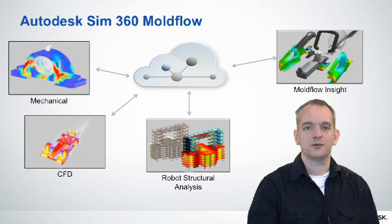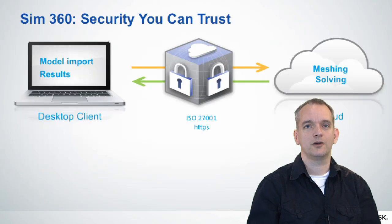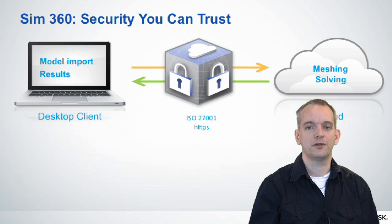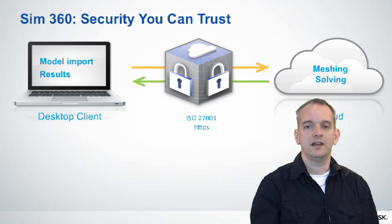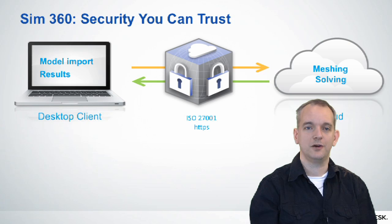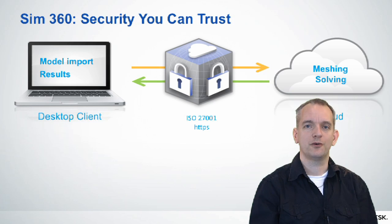Basically you put your client or user interface on your local machine — that can be a laptop or your desktop machine — and you bring in your models in that user interface. When you do something computationally expensive like meshing or running a solve, the data is transferred from your local machine to the cloud and all the computationally expensive components will actually happen in the cloud. Once the meshing or the analysis solve is done, the results are brought back to your local machine and the data is removed from the cloud, so there will not be any residual material on the cloud. The data transfer between your machine and the cloud goes through a secure HTTPS connection, so your data is always secure and nobody can access it.